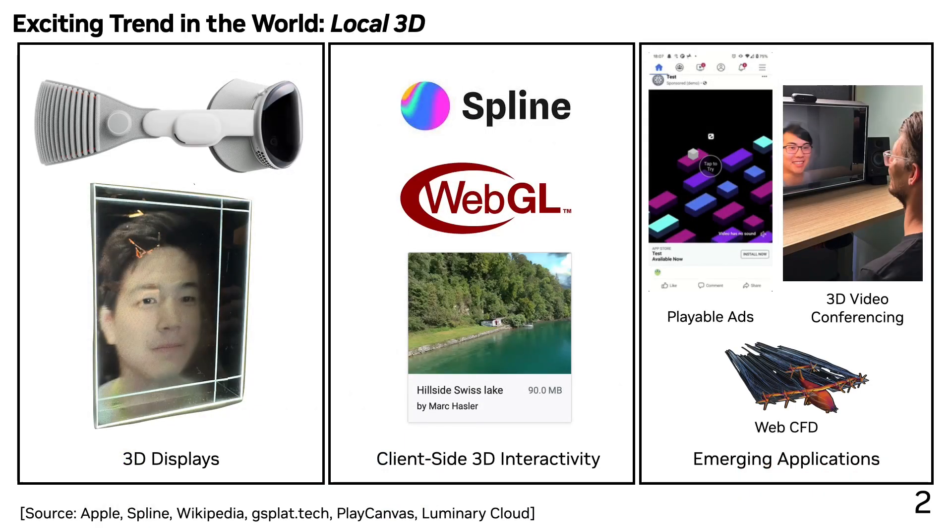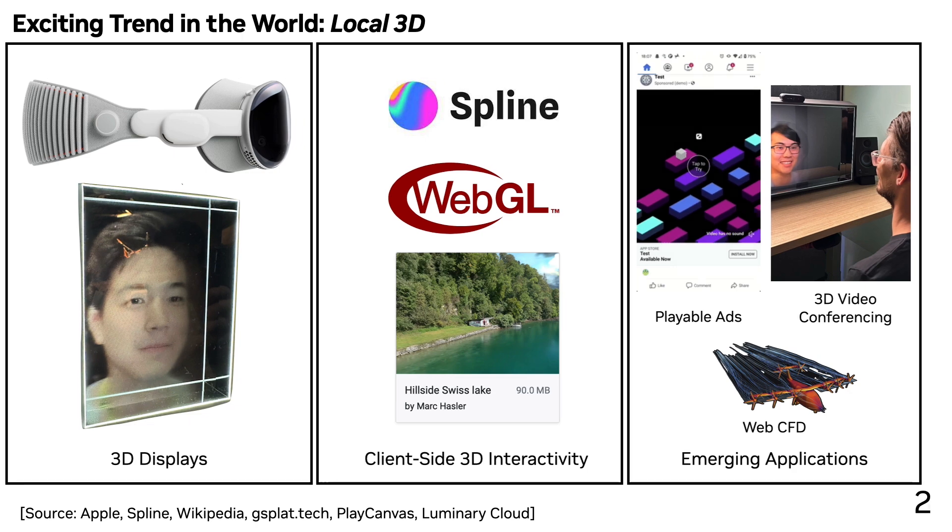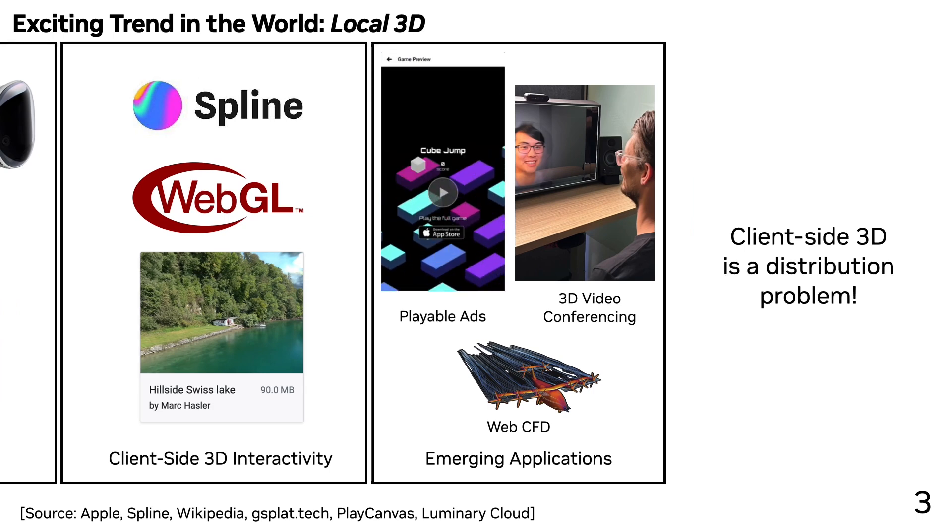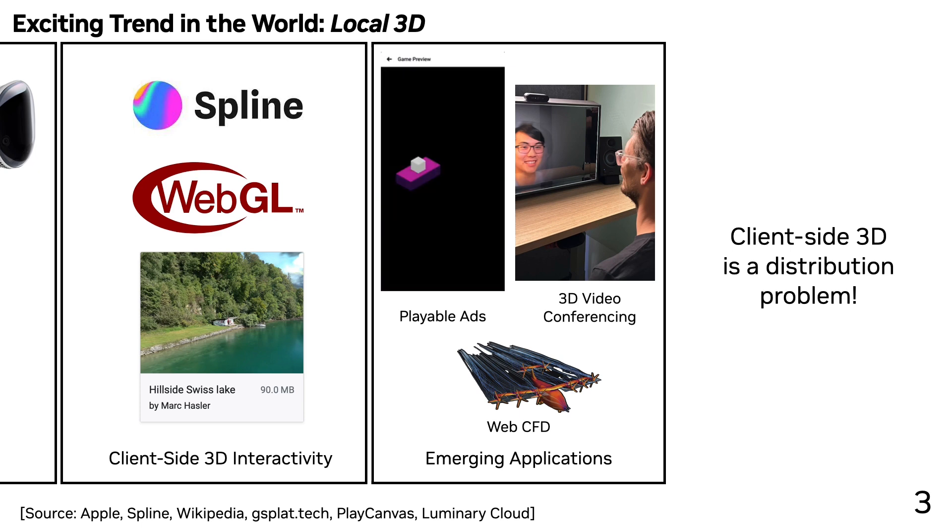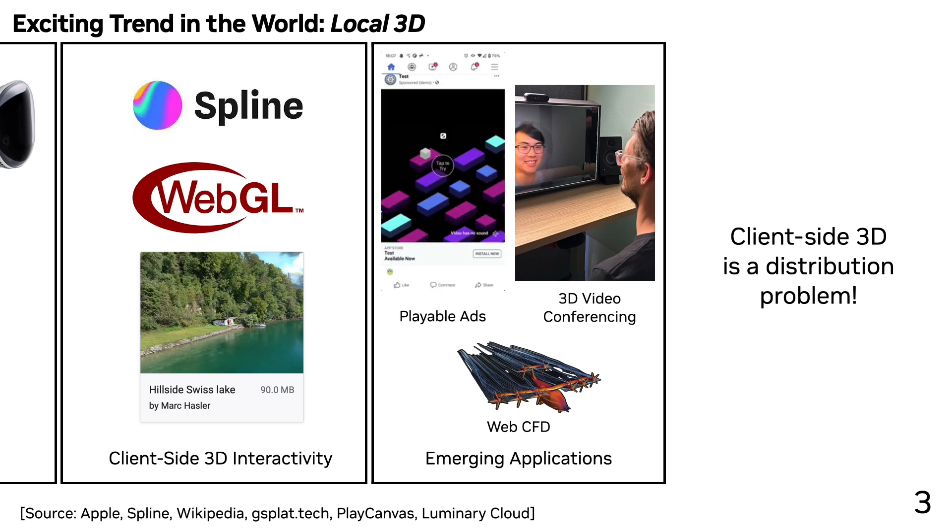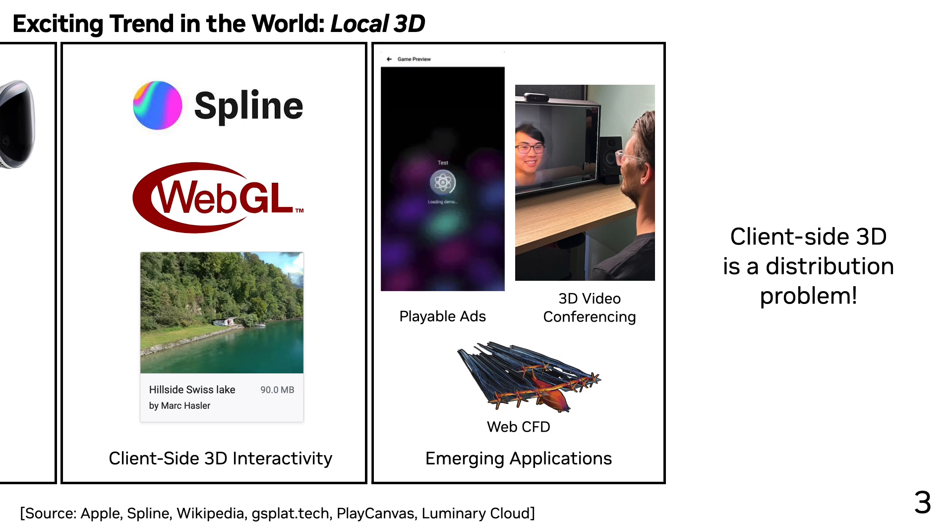There is an exciting trend in the world right now towards local 3D content. This includes technological developments in 3D displays, frameworks and tools for client-side 3D interactivity, and emerging applications that make use of local 3D content. A good user experience for client-side 3D is a distribution problem because we need to be able to get the 3D models to clients quickly. This means that we need to have technology for compression and streaming of 3D content.